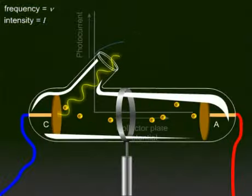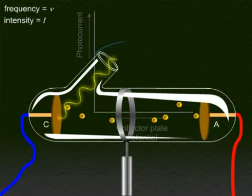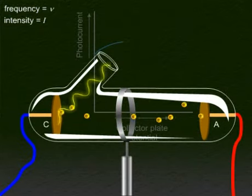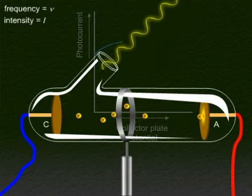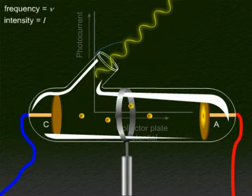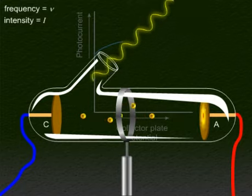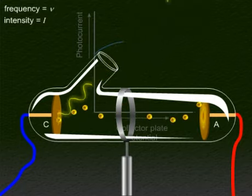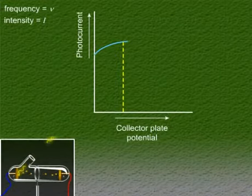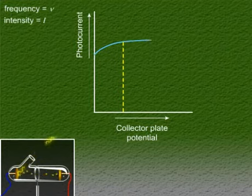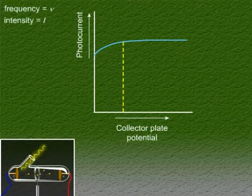As you can see at a certain point, for a certain positive potential of the collector plate, all the emitted electrons will be collected by the collector plate A and the photoelectric current becomes the maximum. In other words, we can say that the photocurrent saturates. If we increase the accelerating potential any further, the photocurrent does not increase. This maximum value of the photocurrent is known as the saturation current.